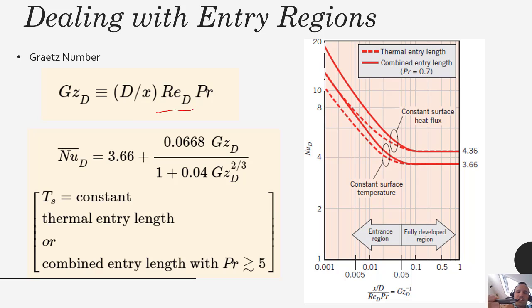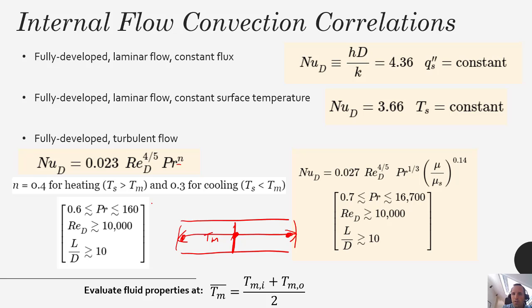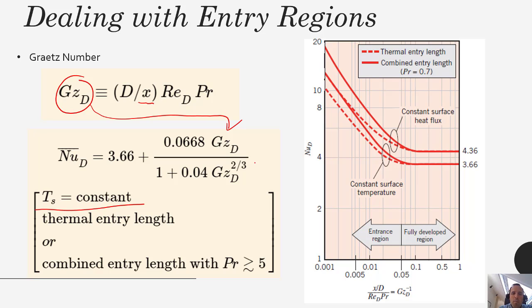The Graetz number is input into a Nusselt number correlation as shown here — this one is for constant surface temperature laminar flow. As x gets larger, the Graetz number gets smaller, this term diminishes, and you're left with the fully developed Nusselt number. If the entry length is a significant portion of your pipe length, you need to account for it using a correlation like this. This example applies when you have a thermal entry length — where the flow is not yet thermally fully developed when it enters — but eventually reaches fully developed form if the pipe is long enough.